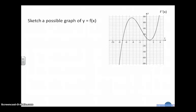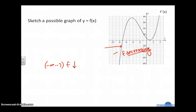First of all, everywhere that the first derivative is negative tells us f is decreasing. So I know that on the interval from negative infinity to negative 7, I need to draw where f is decreasing. From negative infinity to negative 7, f is decreasing. Everywhere else from negative 7 to positive infinity, f is increasing.